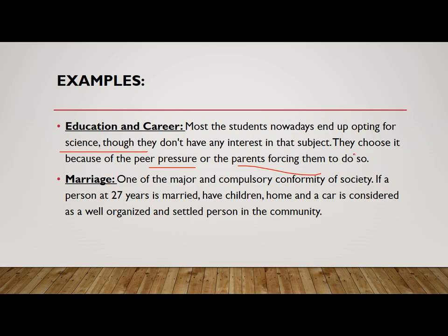Another example is marriage. Society defines a settled person as someone who is around 27 years old, married, has children, a home, and a car — considered a well-settled and well-organized person. That is quite a big goal for an individual to achieve.